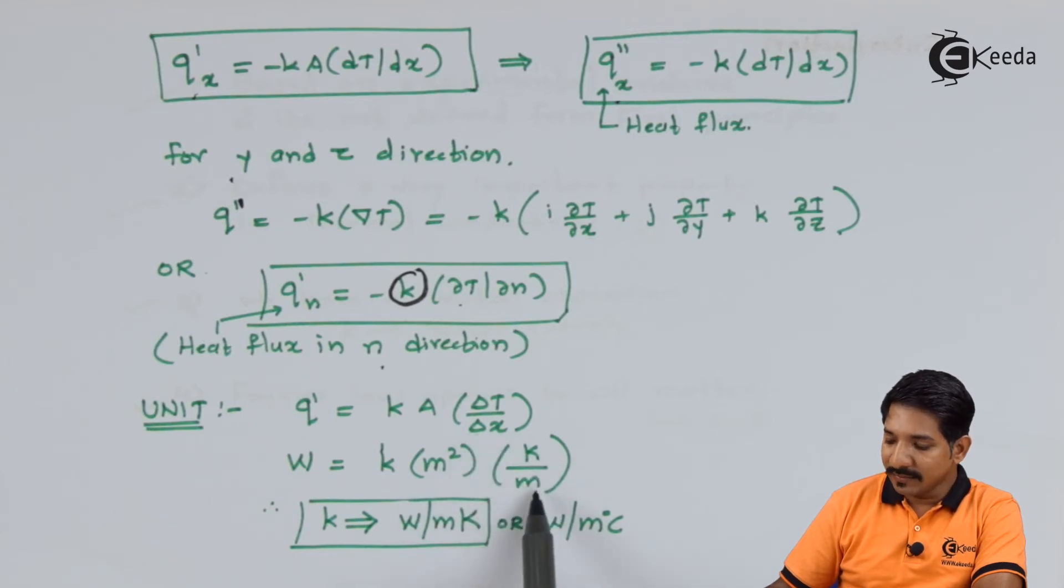So if I rearrange my terms what I get is the unit for K, the thermal conductivity, can be written as Watt per meter Kelvin or Watt per meter degree Celsius.